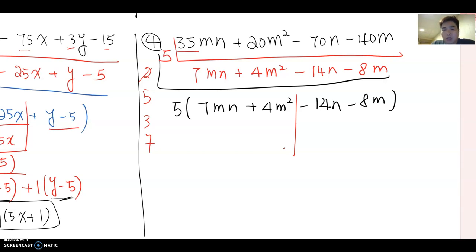Now what's the common factor between 7mn and 4m²? Yes, as you see, m is the common factor. Then this becomes 7n plus 4m. Since there's no common factor between 7n and 4m, I'm gonna make a multiplication shape, so it becomes m times 7n plus 4m.